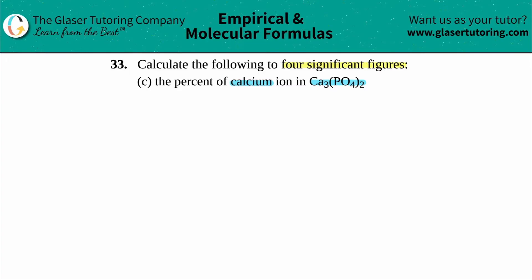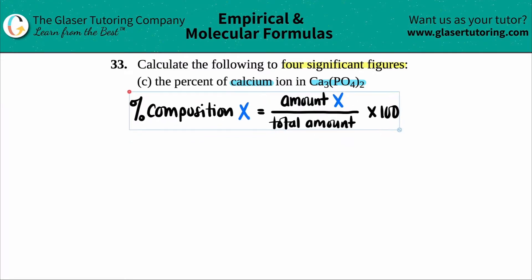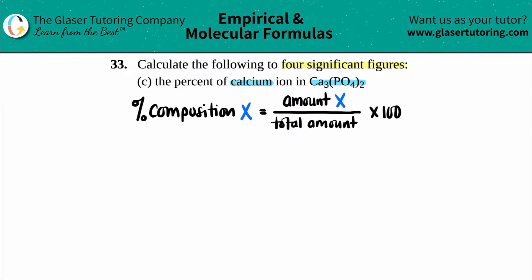Okay, so we want to find a percent of calcium in the entire compound. So there's a formula for this. We're just trying to find out a percent, right? And a percent is basically part over whole. So we can know it as this formula. A percent of anything is always a part divided by a whole times 100.